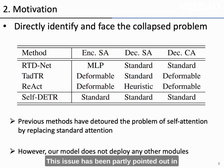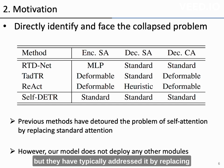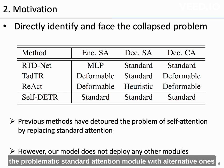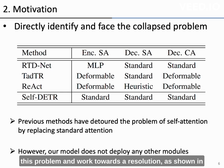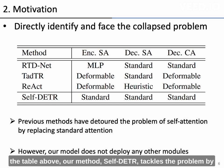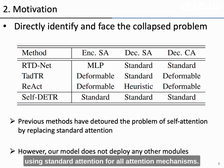This issue has been partly pointed out in previous DTR-based methods for TAD as well, but they have typically addressed it by replacing the problematic standard attention module with alternative ones rather than solving the problem. However, our goal is to shed a clear light on this problem and work towards a resolution. As shown in the table above, our method, Self-Feedback DTR, tackles the problem by using standard attention for all attention mechanisms.